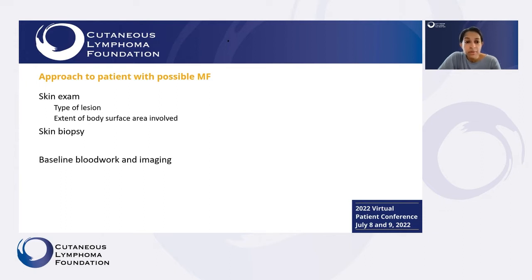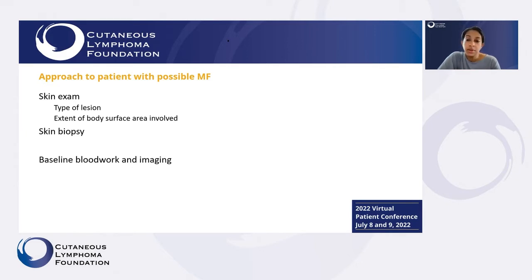Generally, when we see patients who have possible MF, this really starts with the dermatology team. They'll do a skin exam, look at and understand the types of skin findings, and how much of the skin is involved. Patients will then have a biopsy. If the diagnosis suggests mycosis fungoides, then they'll have some baseline lab work and some imaging scans in certain situations.